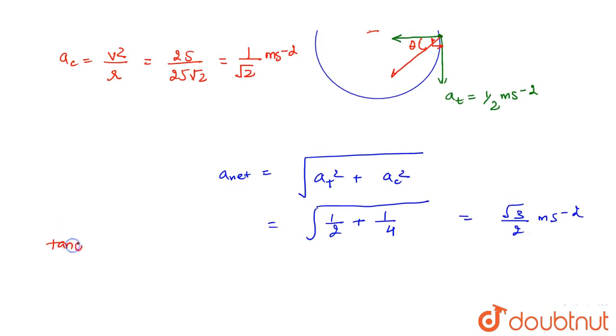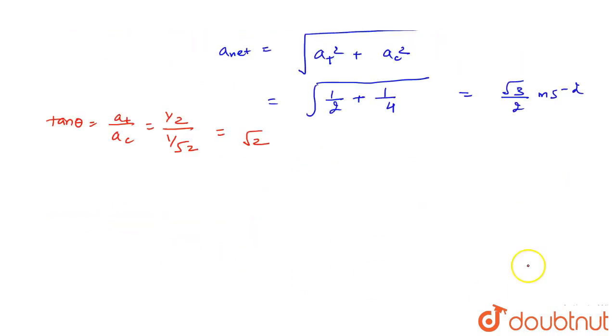For the direction, tan θ equals tangential acceleration divided by centripetal acceleration. This is (1/2) divided by (1/√2), which equals 1/√2. So θ = tan⁻¹(1/√2).